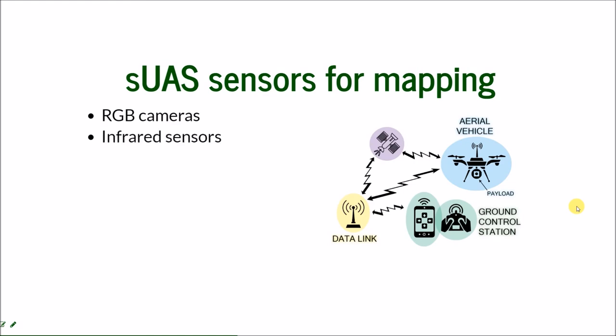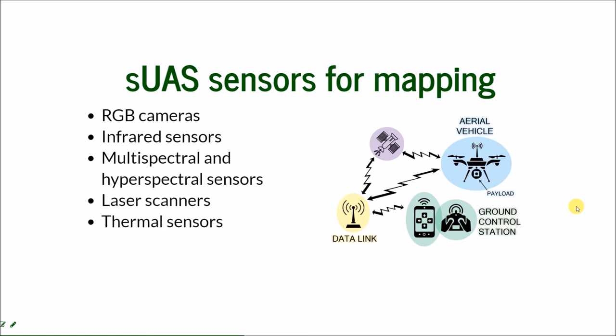More advanced way for collecting spatial data is the infrared sensors that include one more infrared band. This is widely used in agriculture. If you have more bands, you can have multispectral or even hyperspectral sensors. You can have laser scanners and thermal sensors. Thermal sensors are not widely used in mapping because of the restrictions and some challenges about mapping, but they can be coupled with different sensors and then you can create thermal maps.